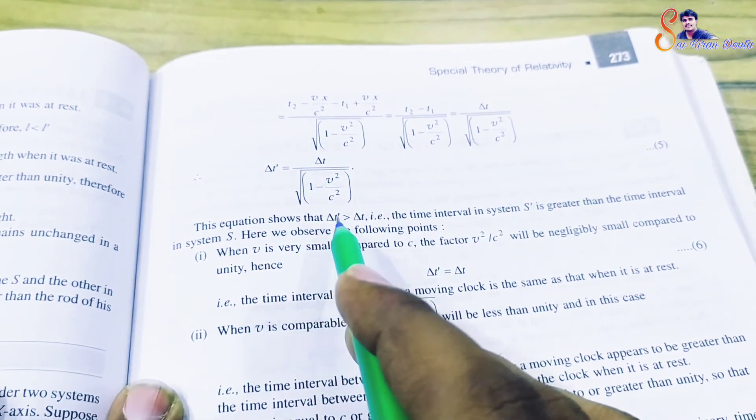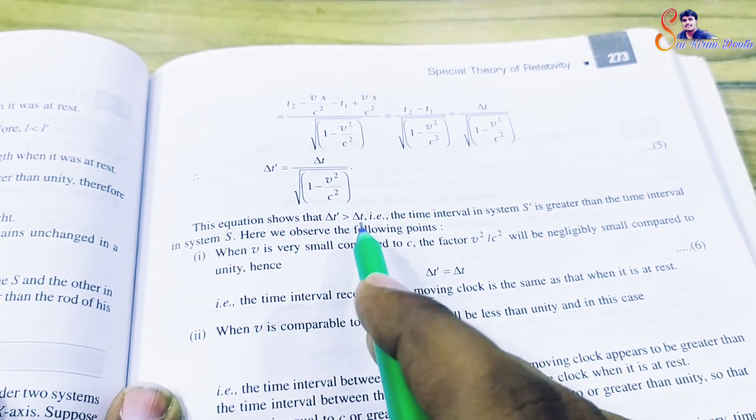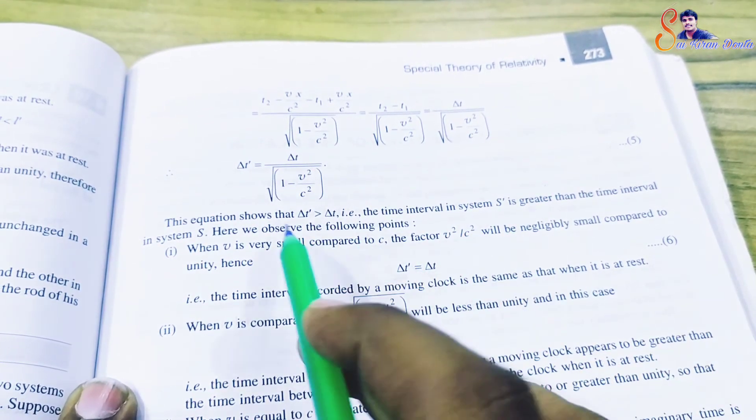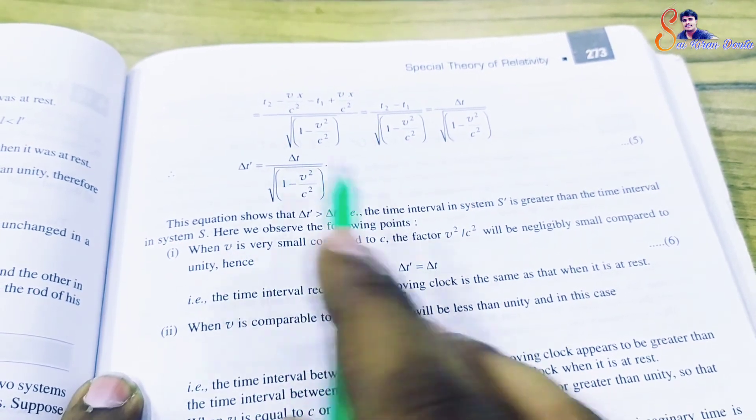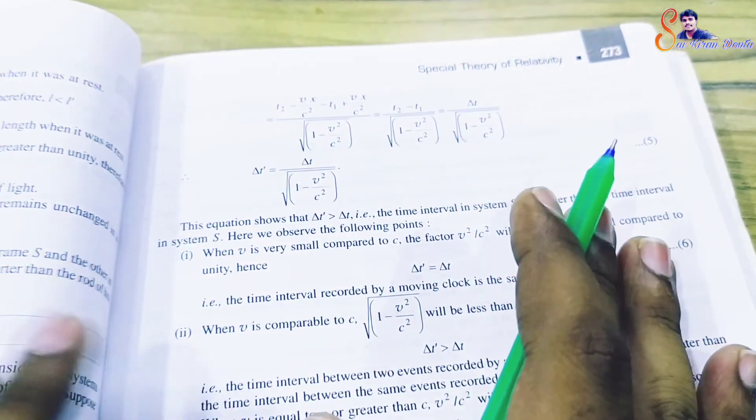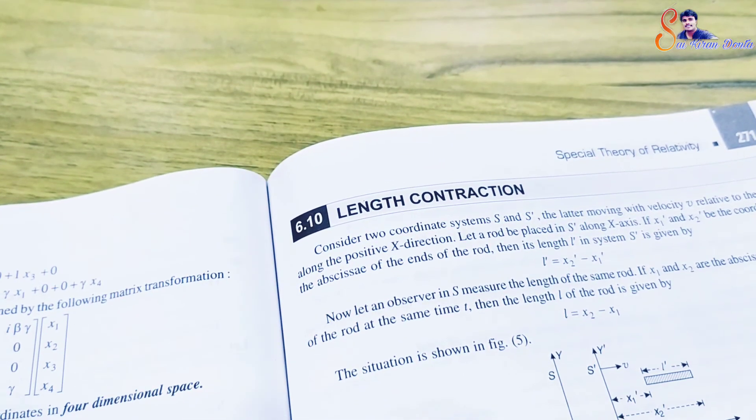This equation shows that delta t dash is greater than delta t. That is, the time interval in system S dash is greater than the time interval in system S. This is about time dilation and length contraction. Thank you.